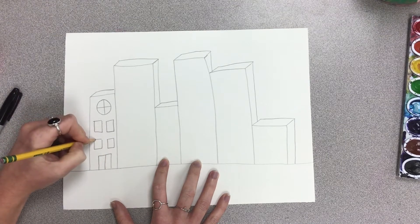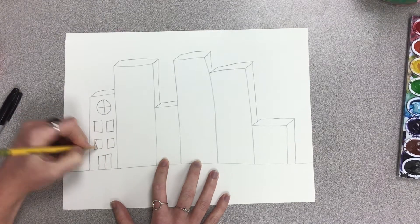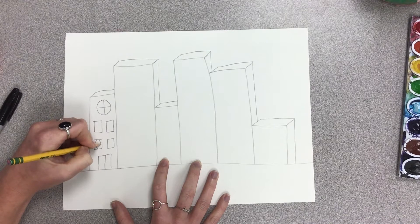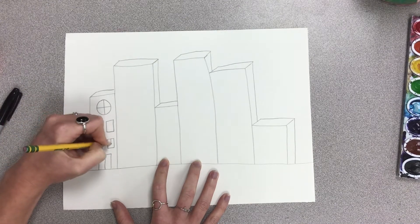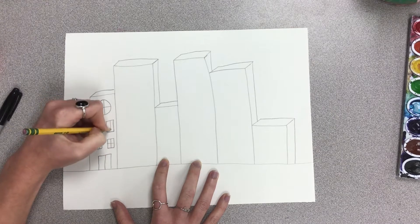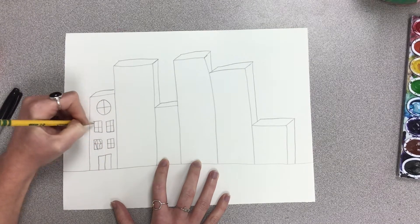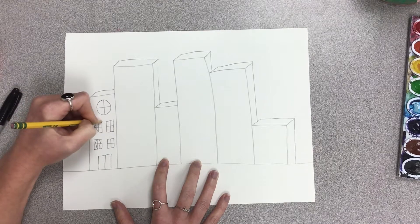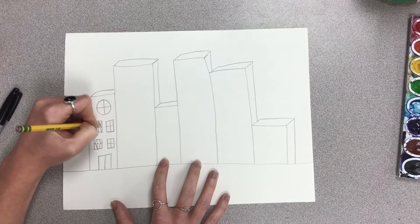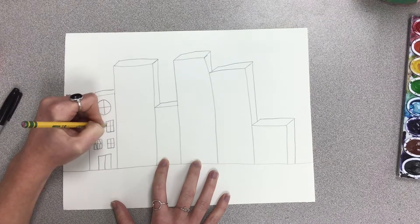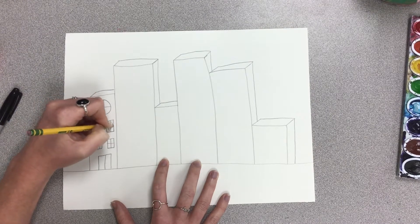You can have curtains on the windows, you can do a plus sign in the middle to create the bars on the windows, whatever you want to do, but as long as you're making it unique and different and being creative and having fun with it.